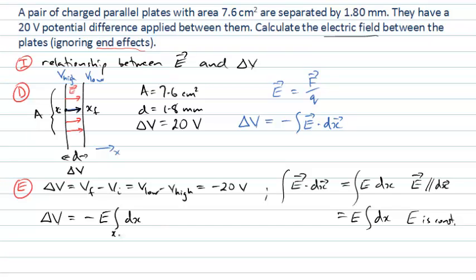So now my change in potential will equal minus E times the integral of dx. And remember, I'm going here from x initial to x final. So that's going to equal, and that's an easy integral to do. If I integrate dx between xf and xi, I simply get xf minus xi. That's that integral done. And we know what xf minus xi is; it's this distance d, the separation of the plate. So this is minus E times d.